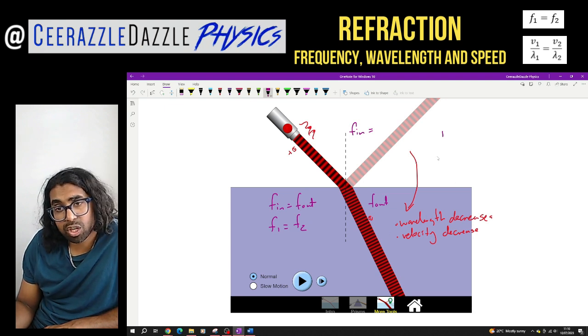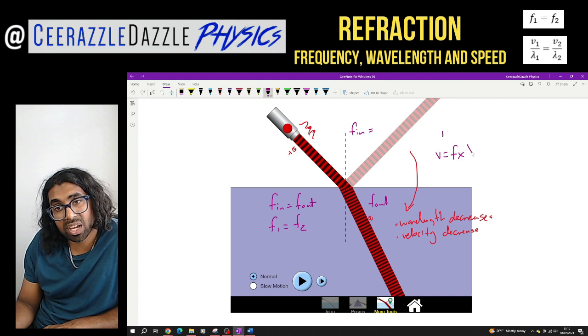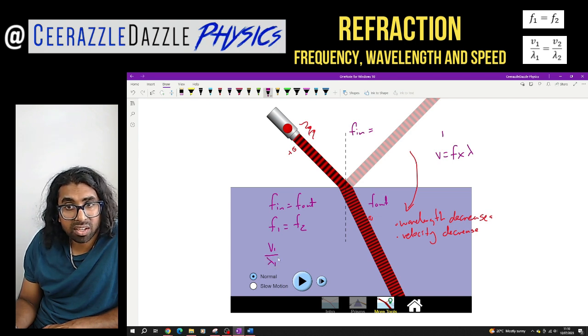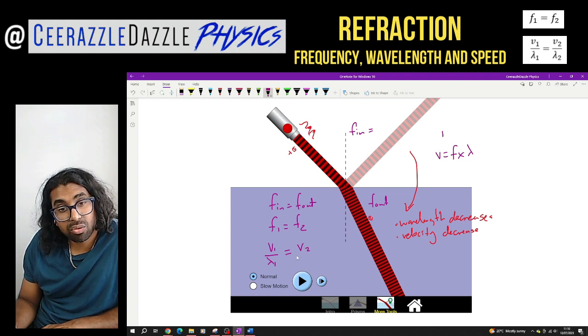And then finally we can use the equation of velocity is equal to frequency times the wavelength over here. We can now incorporate that into here. So therefore we can say that v1 over lambda 1, for the first frequency, will be equal to v2 over lambda 2 over here.